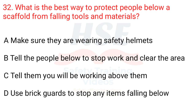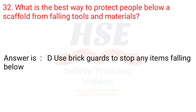Question 32: What is the best way to protect people below a scaffold from falling tools and materials? A. Make sure they are wearing safety helmets. B. Tell the people below to stop work and clear the area. C. Tell them you will be working above them. D. Use brick guards to stop any items falling below. Answer is D. Use brick guards to stop any items falling below.